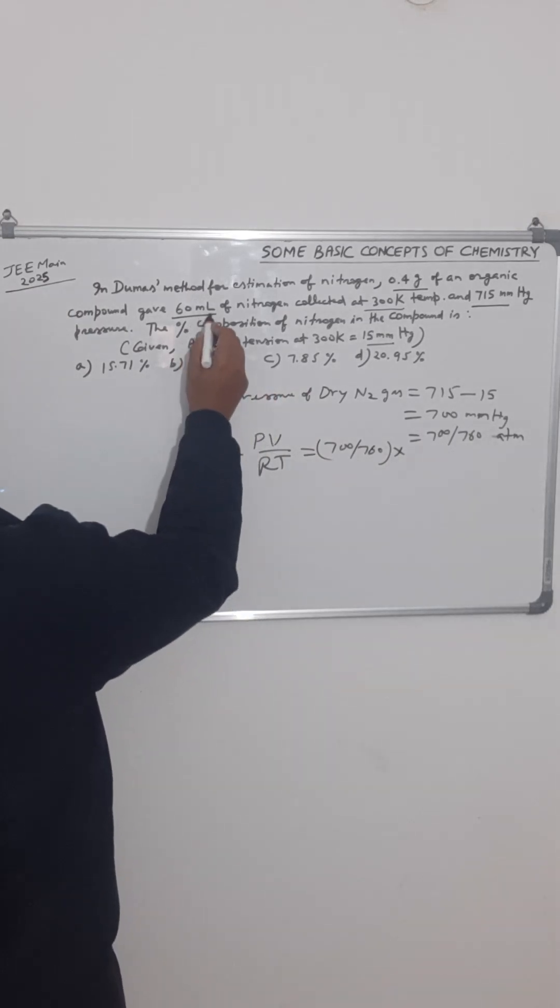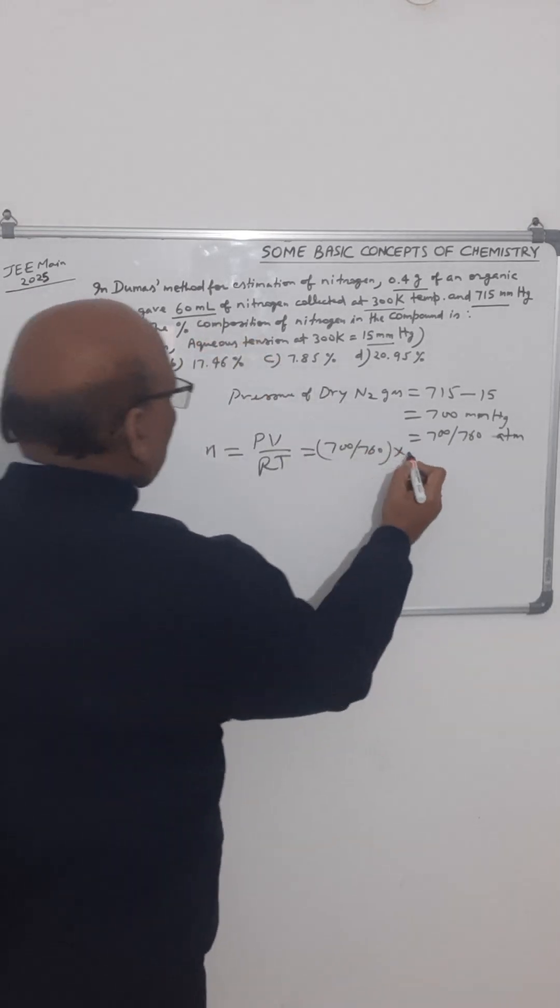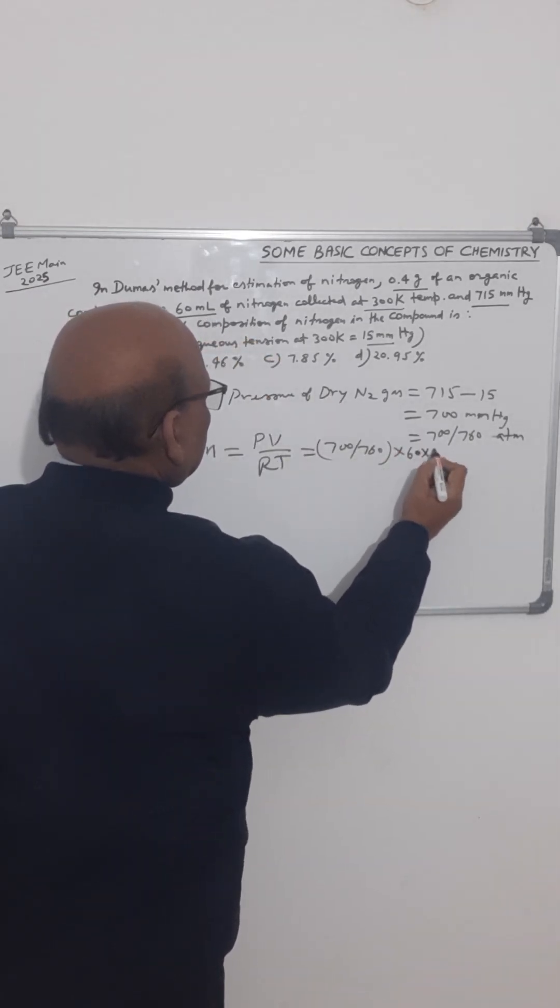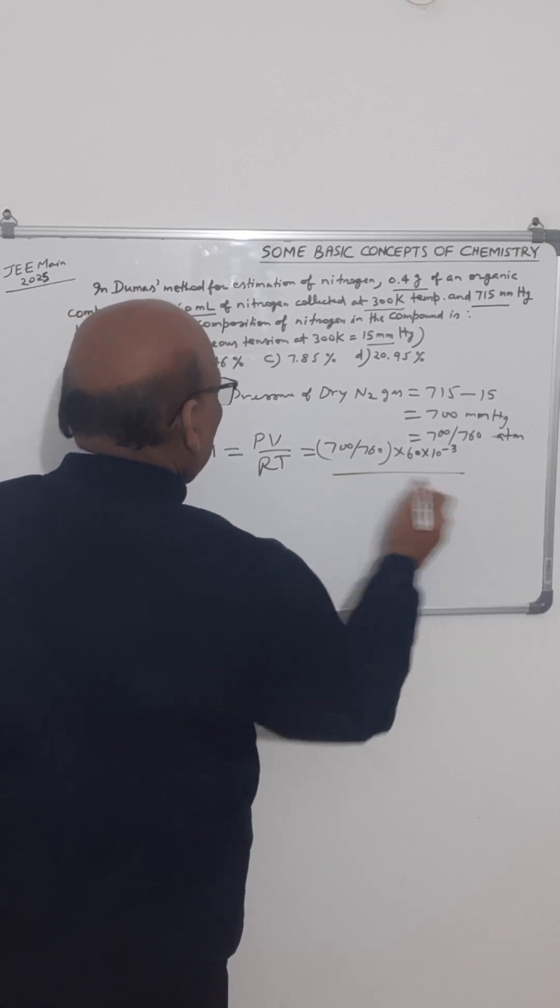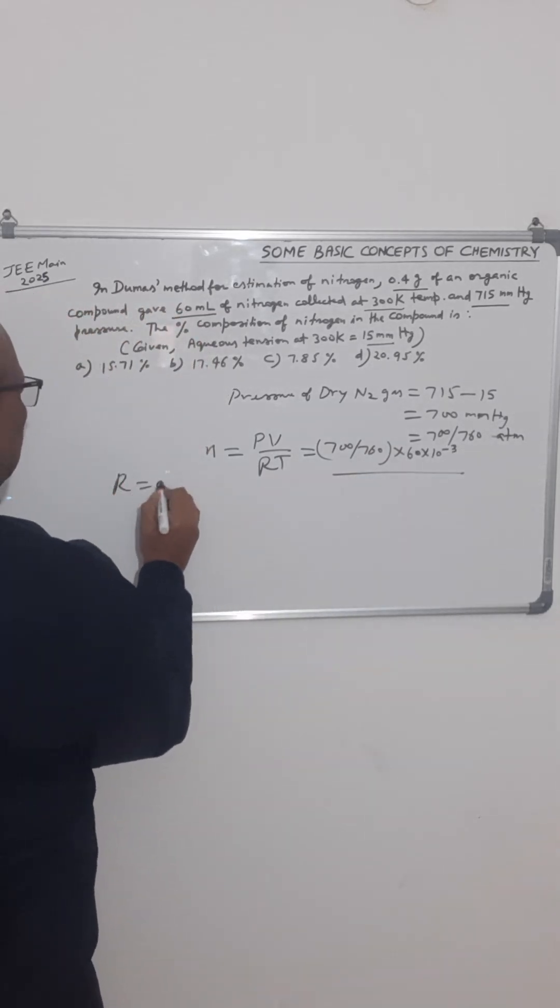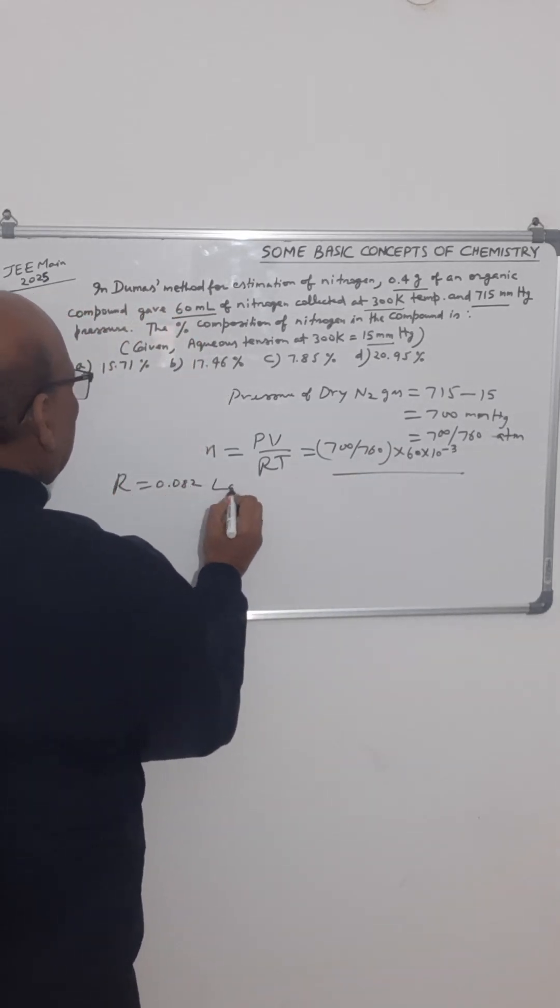Now volume of nitrogen collected is 60 ml, so we convert it into liters. It will be 60 into 10 to the power minus 3. This is in liters because the value of R is 0.082 in liters per mol Kelvin.